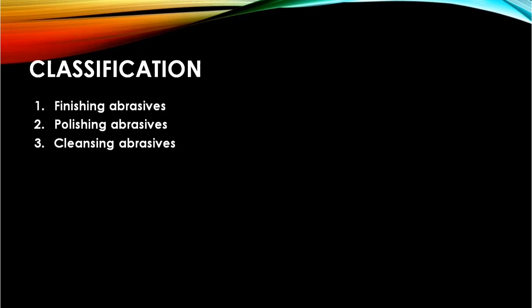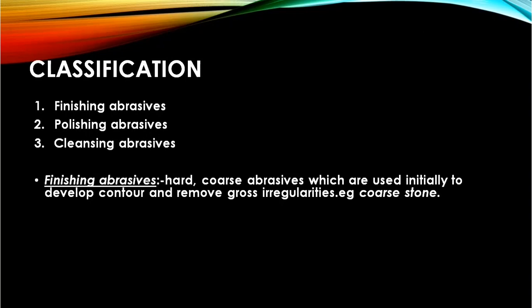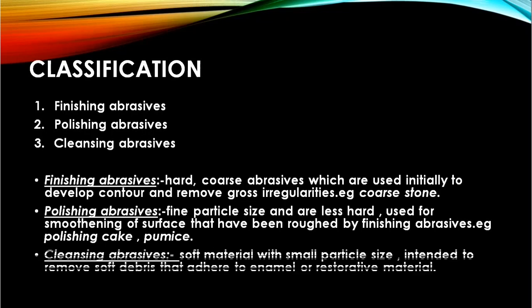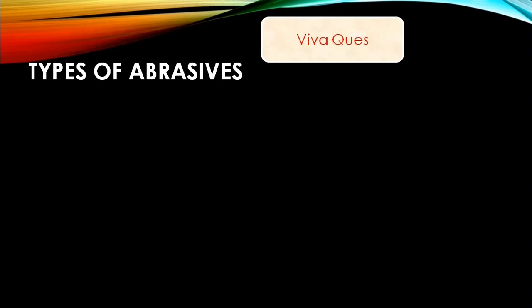Classification of abrasives is of three types: finishing, polishing, and cleansing. Finishing are coarse ones used to remove gross irregularities and develop initial contour — example: coarse stone. Polishing are fine size, less hard abrasives used to smooth the rough surface produced by finishing — examples: pumice and polishing cake. Cleansing are small particle size, soft materials that remove soft debris adhered to enamel or restoration.